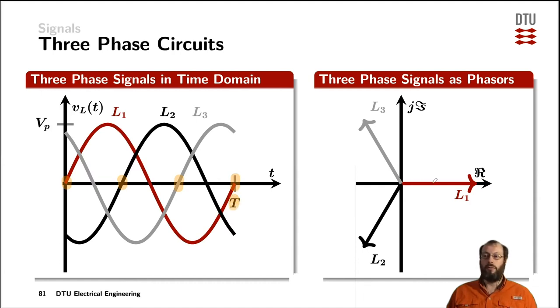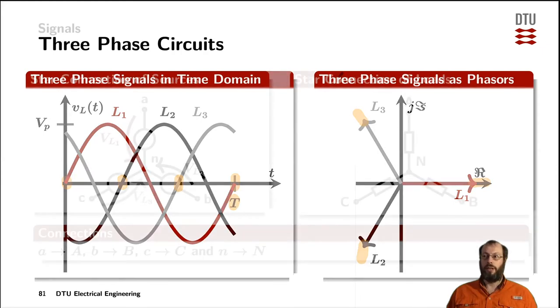The same information is noted here with the phasor of line one on the real axis, also informing us that its phase is zero. Line two has the minus 120 degrees phase shift, line three has the plus 120 degrees phase shift.